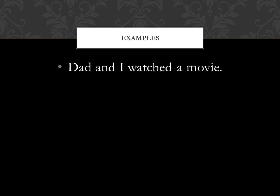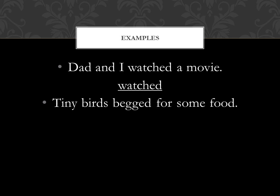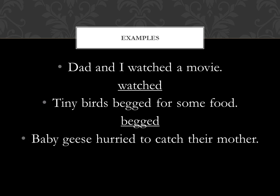Let's have more examples. 'Dad and I watched a movie.' The verb is watched — it ends with -ed, so it's a past tense verb. 'The birds begged for some food.' The verb is begged. We usually write it b-e-g, and it has only one vowel, so we double the consonant — g-g — then -ed. 'Baby geese hurried to catch their mother.' The verb is hurried. The base form is hurry — h-u-r-r-y — we cross the y and add i-e-d.